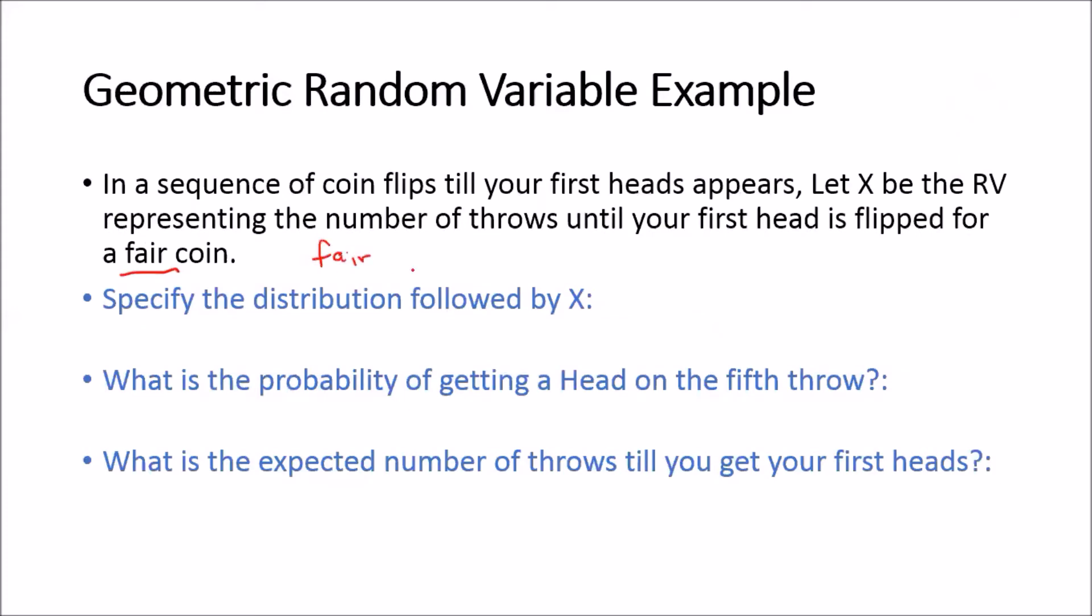Fair coin. The idea of fair is equivalent to the idea of you having an equal chance of succeeding and failing. So each outcome is equally likely. In this case, you can have a heads with probability of a half, or you can have tails with probability of a half. So if that's the case, then X will be distributed geometrically with a parameter p equal to a half or 0.5.